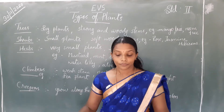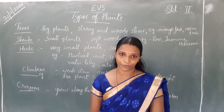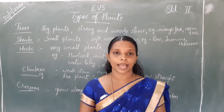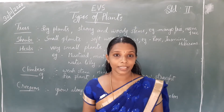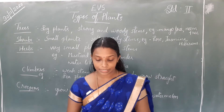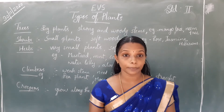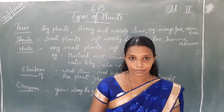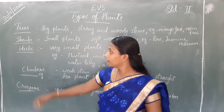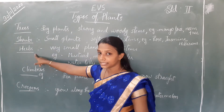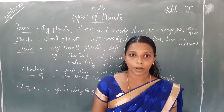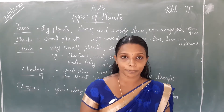We see many types of plants around us. They are of different shapes and sizes — some are very big and some are very small. Based on the size and type of stem, plants are of different types. There are trees, shrubs, herbs, climbers, and creepers. Let us learn about different types of plants today.